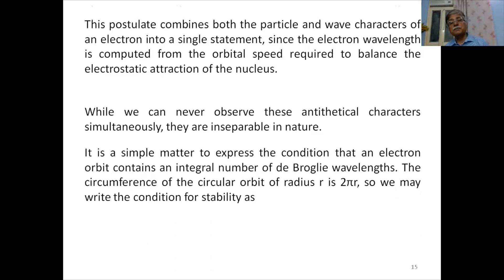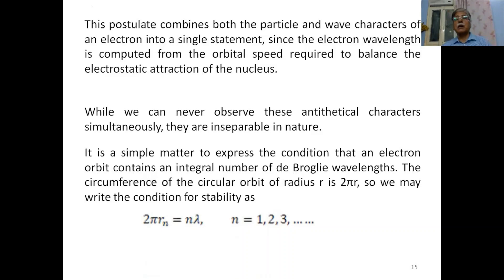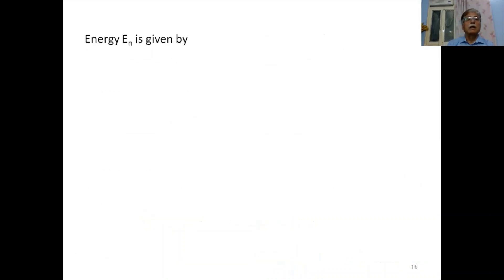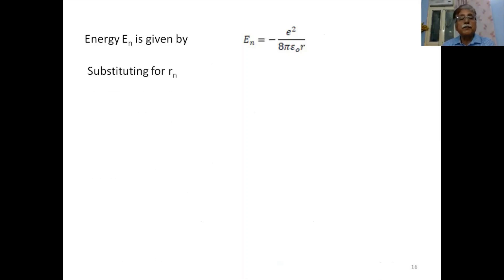The condition for stability is 2πrₙ = nλ, where n = 1, 2, 3, etc. The permitted radii come out to be rₙ = n²h²ε₀ / (πme²), for n = 1, 2, 3, etc. — these are the only radii permitted as derived through the de Broglie concept. The energy in the nth orbit is given by −e²/(8πε₀r). Substituting for rₙ, the energy levels come out to be Eₙ = −(me⁴)/(8ε₀²h²) × (1/n²).